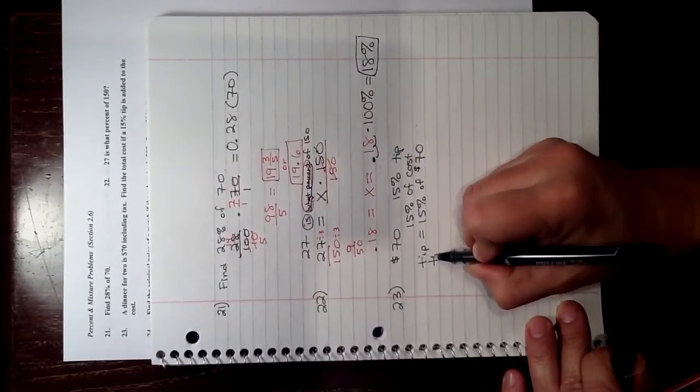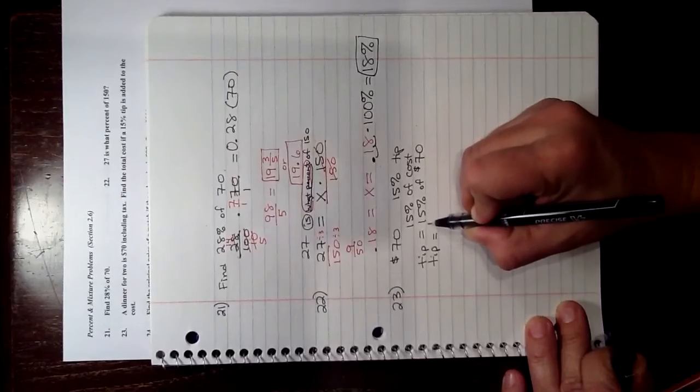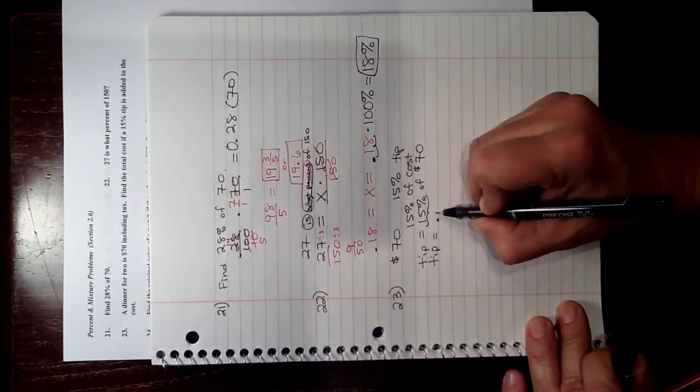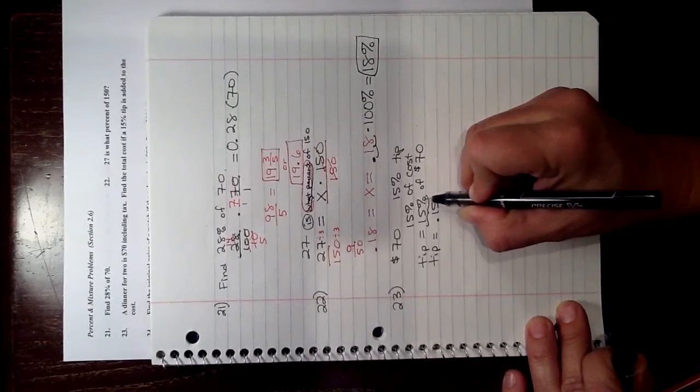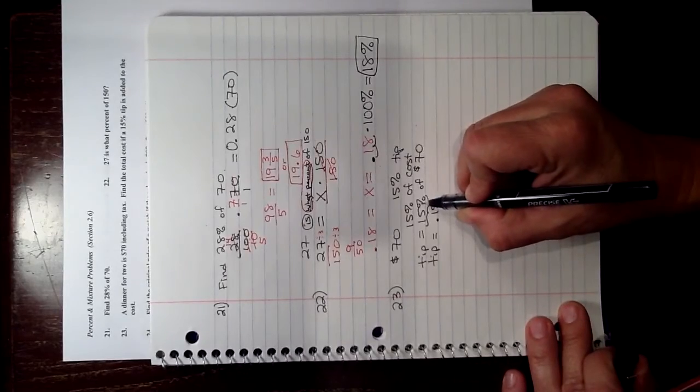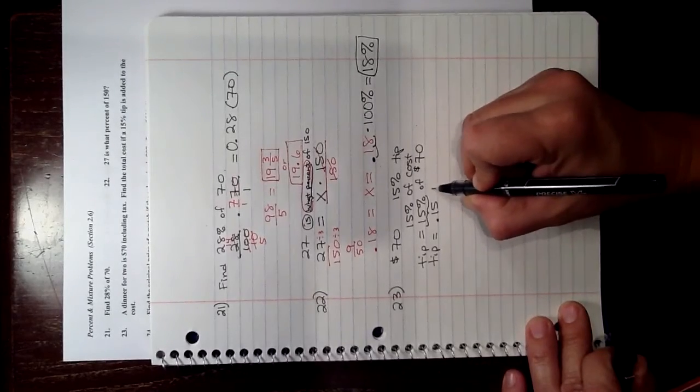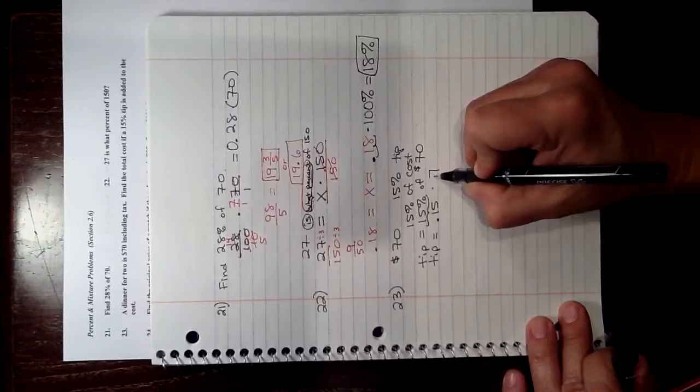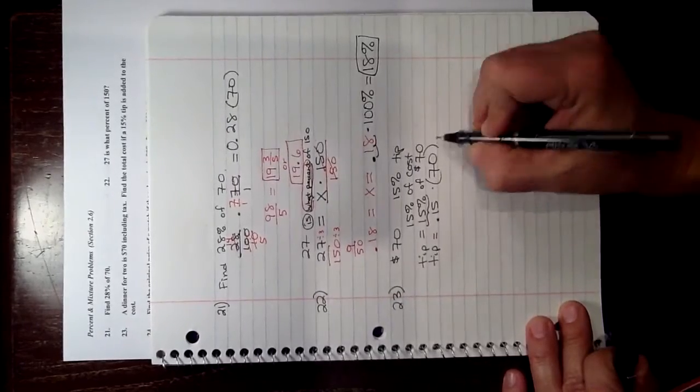So first off, to figure out the tip, we take 15% or 0.15, because 15% means 15 divided by 100, of is multiply, $70 is the number 70.